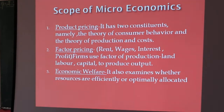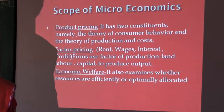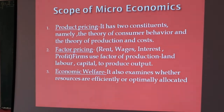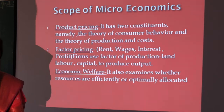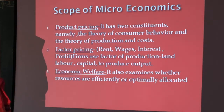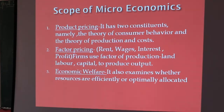In consumer behavior, we study what price consumers would want to purchase a product and for which price they find it reasonable. Next is production and cost, where we talk about the producer's point of view — what price the product should be sold at. Consumers prefer to purchase at a low rate while producers prefer to sell at a high rate.